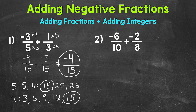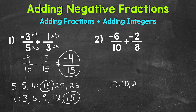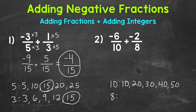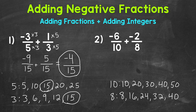Let's move on to number two, where we have negative six tenths plus negative two eighths. The first thing we need to do is find a common denominator — the least common denominator by finding the least common multiple between 10 and 8. Multiples of 10: 10, 20, 30, 40, 50. Multiples of 8: 8, 16, 24, 32, 40. So 40 is the least common multiple, making it our least common denominator.